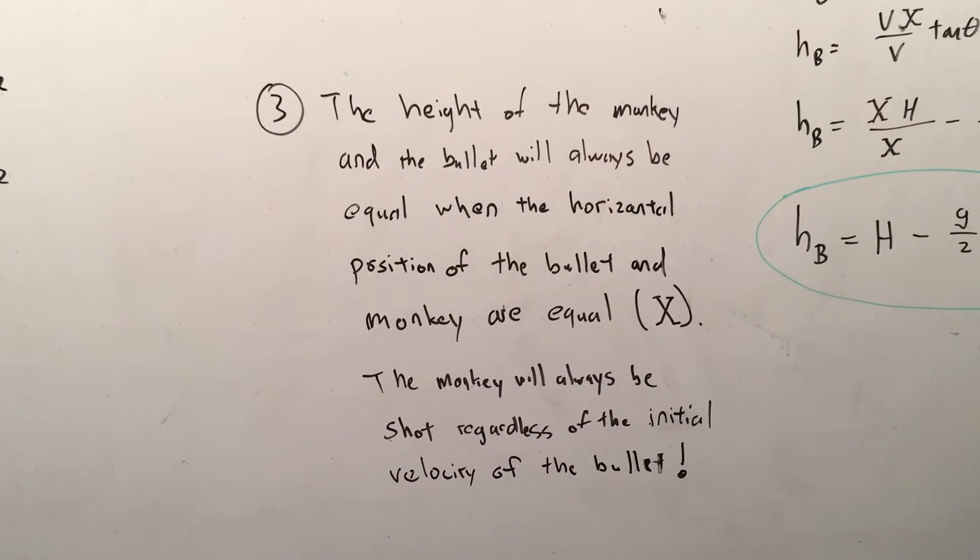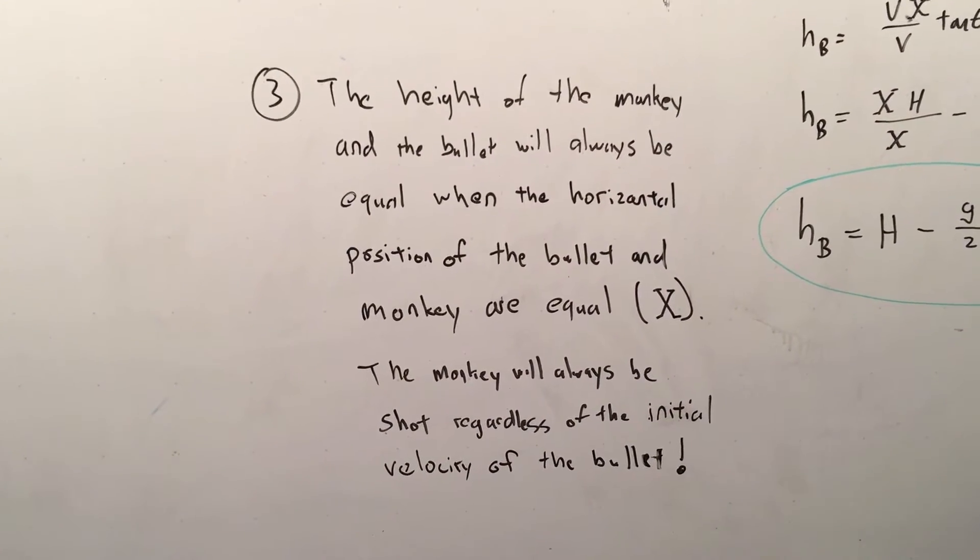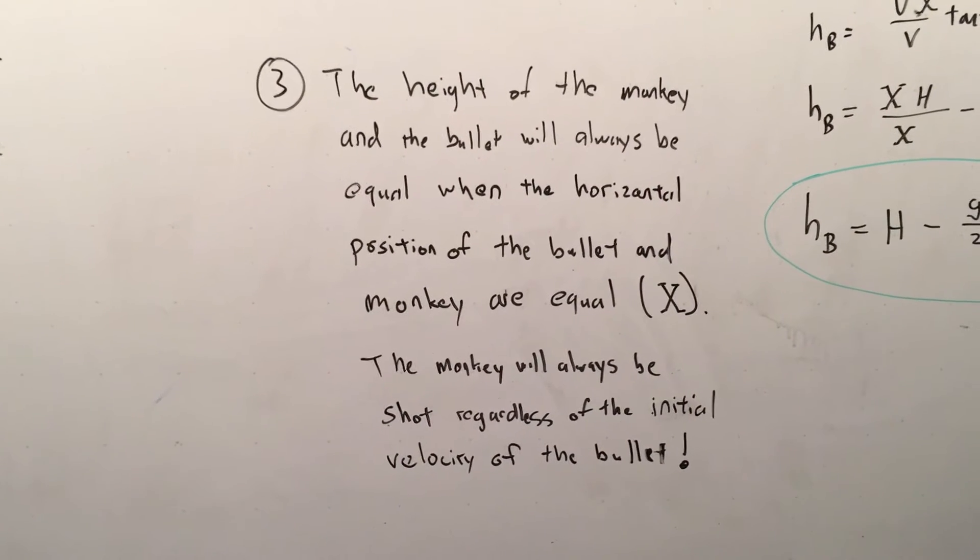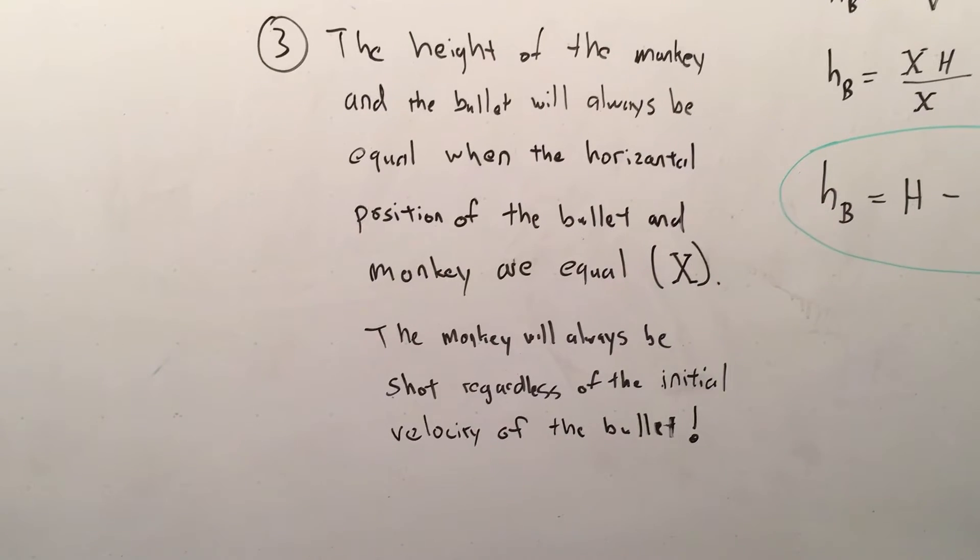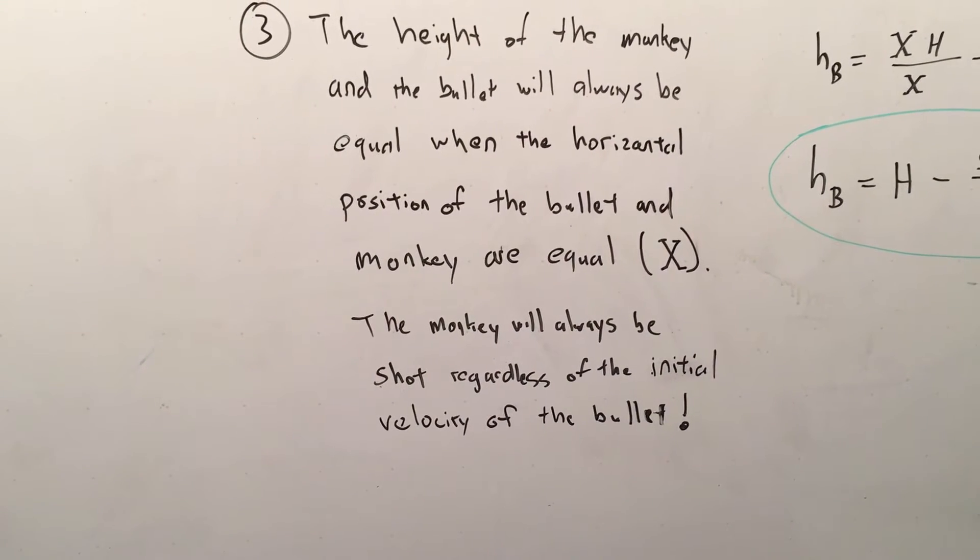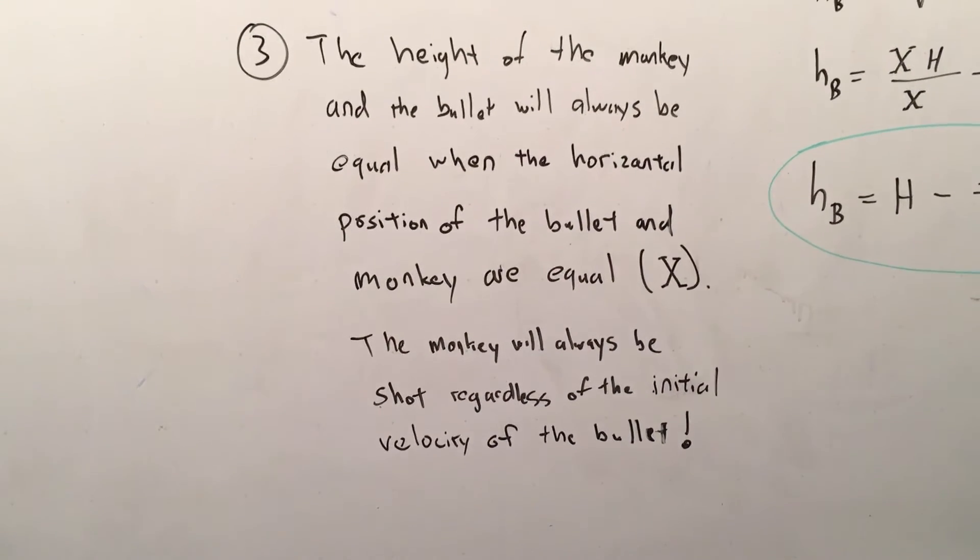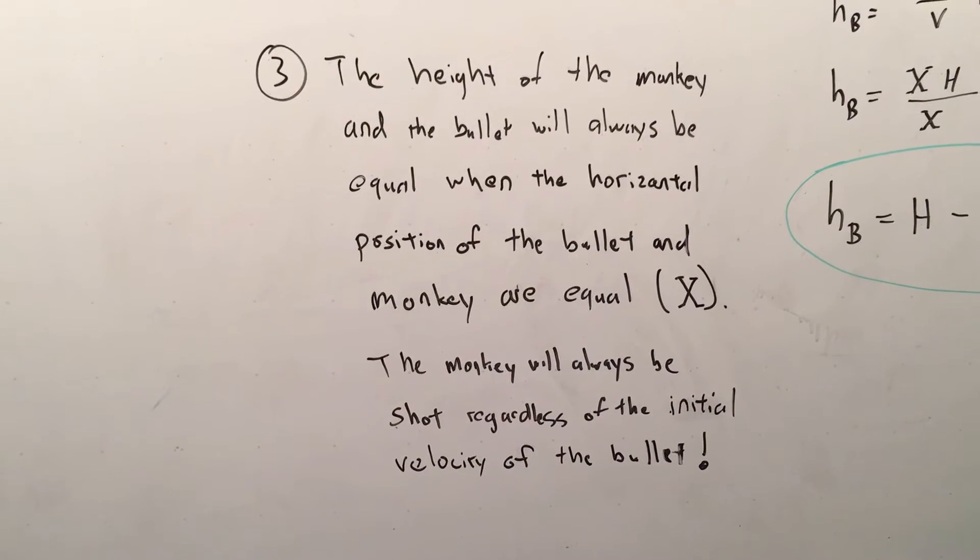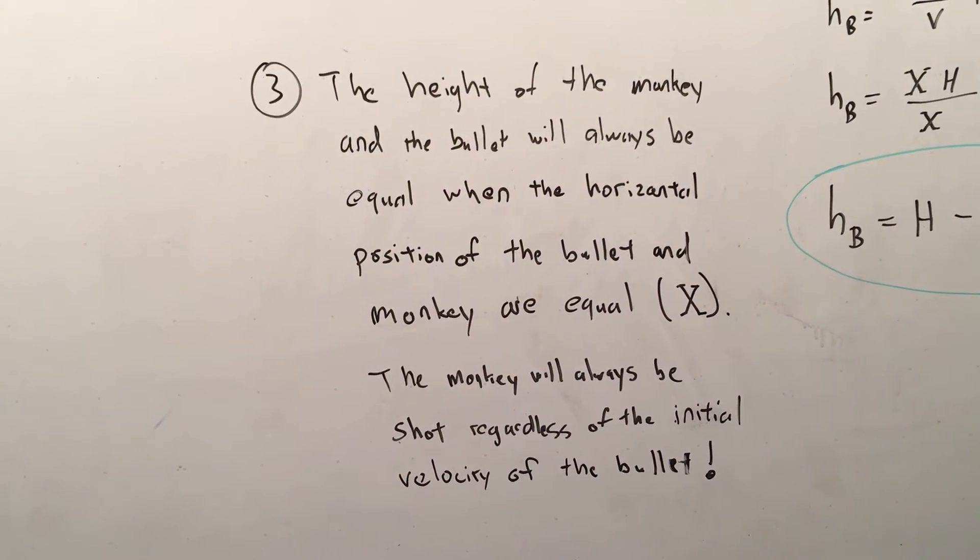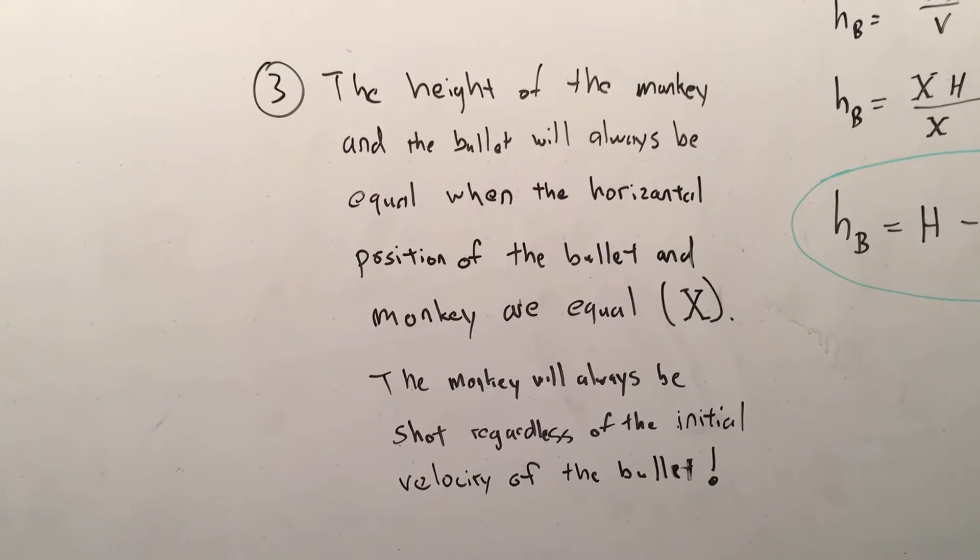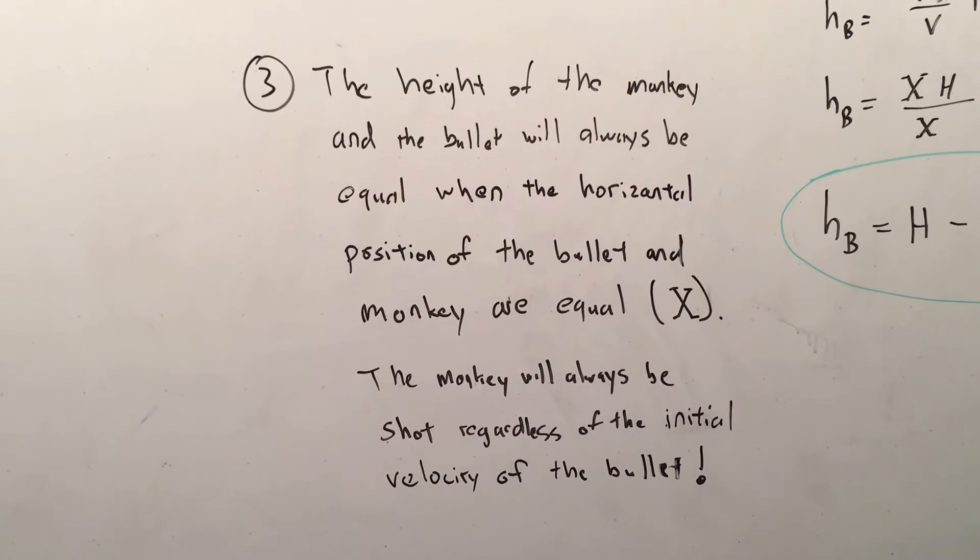So in conclusion, the height of the monkey and the bullet will always be equal when the horizontal position of the bullet and the monkey are equal. The monkey will always be shot regardless of the initial velocity of the bullet if he uses the strategy to let go of the limb when he sees the trigger being pulled. That concludes my video on projectile motion.